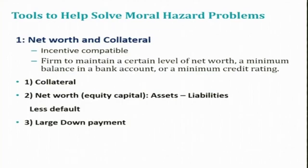One solution is to increase net worth and collateral. When borrowers have more at stake because their net worth is high, or the collateral they have pledged to the lender is valuable, the risk of moral hazard — the temptation to act in a manner lenders find objectionable — is greatly reduced because borrowers themselves have a lot to lose. This makes the debt contract incentive compatible, aligning the incentives of borrowers with those of the lender.